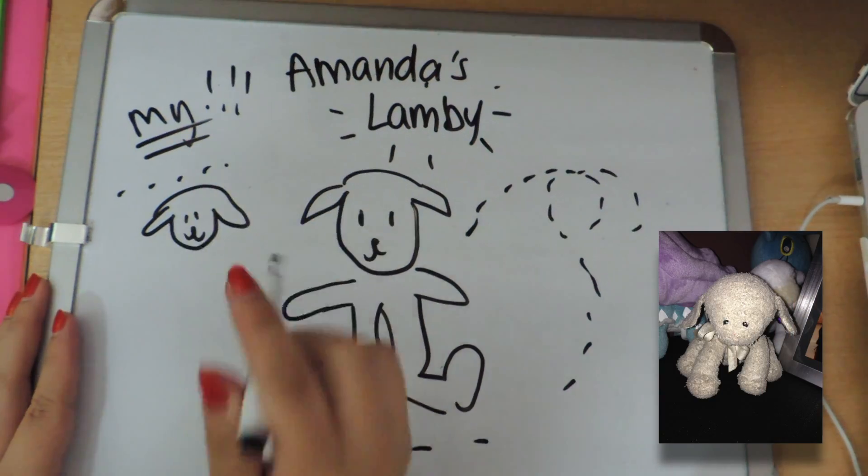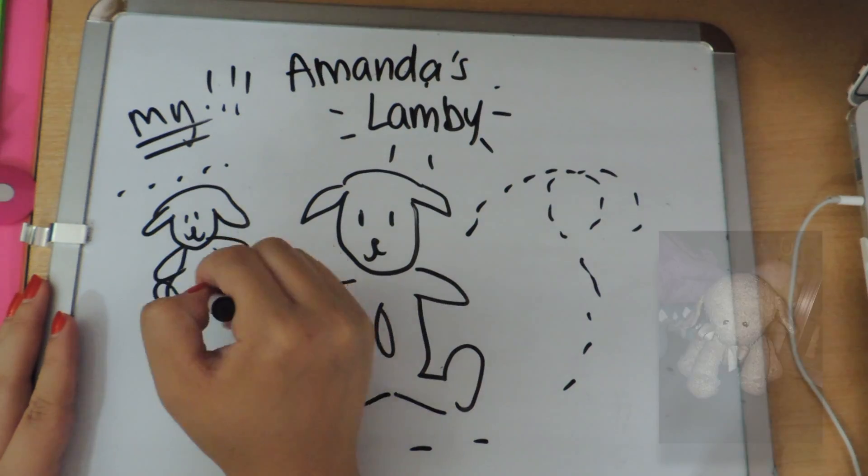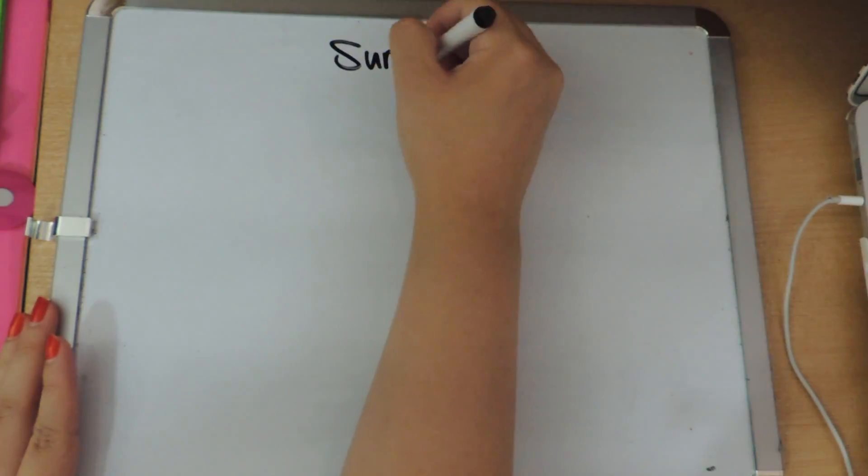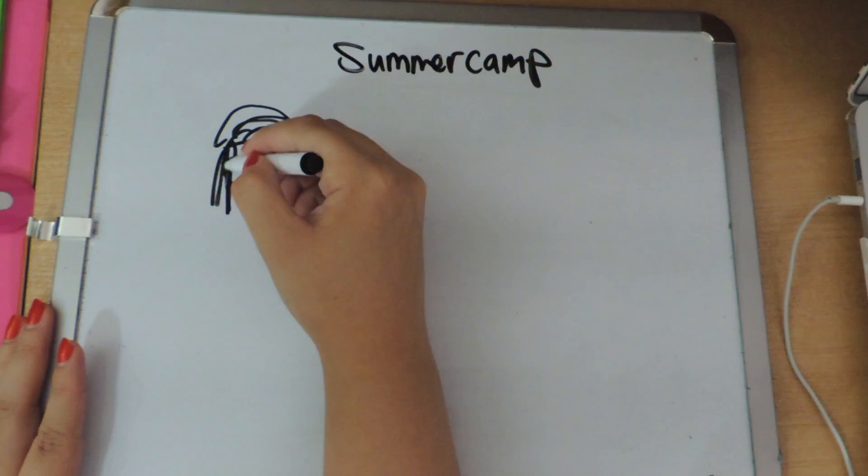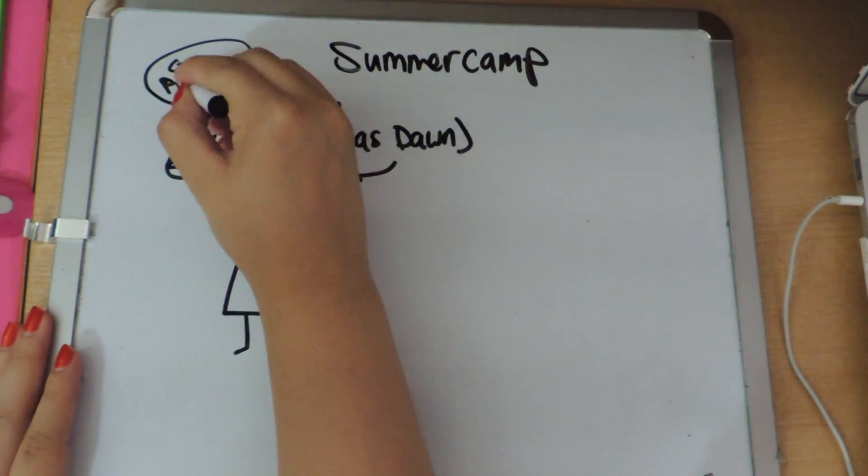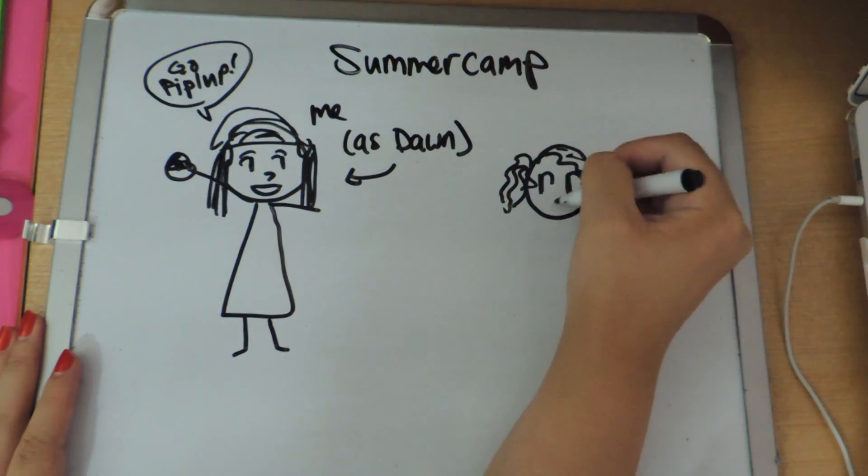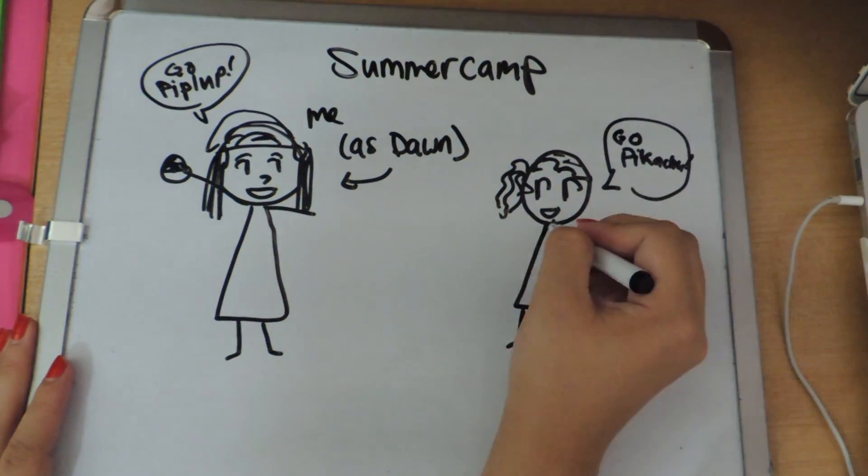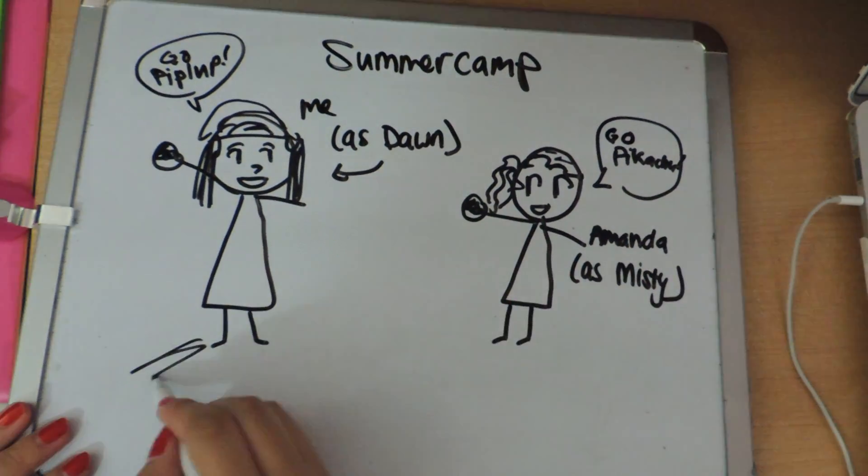Amanda had this stuffed lamb named Lammy she would take everywhere, and I found a lamb too and named mine Lammy. I remember those days in summer camp where we'd pass the time by buying these real pokeballs and role-playing with our two other guy friends who acted as Ash and Brock while we were Misty and Dawn, and we were loyal to those Pokemon personas.